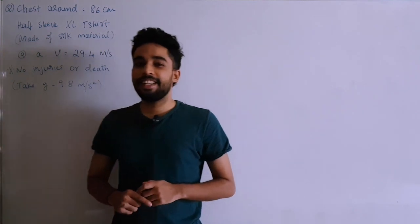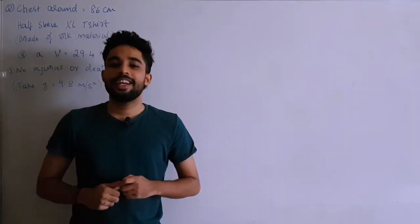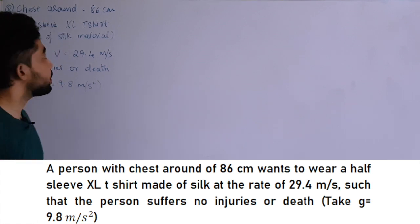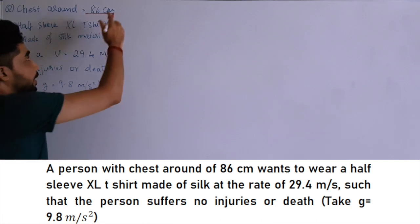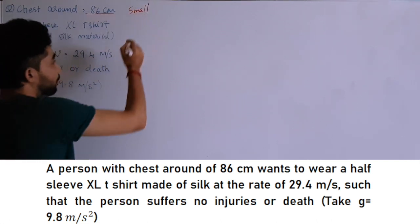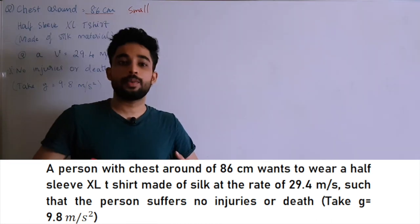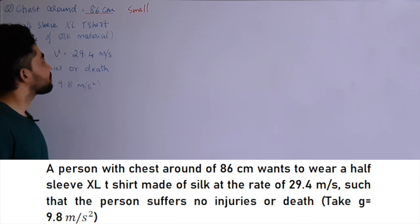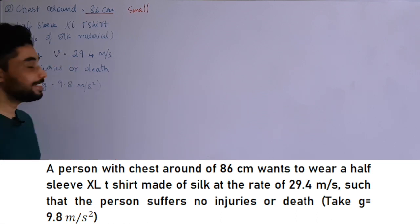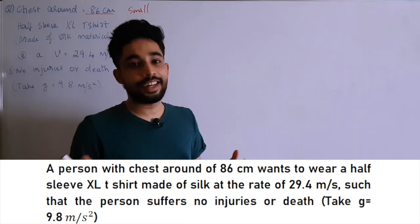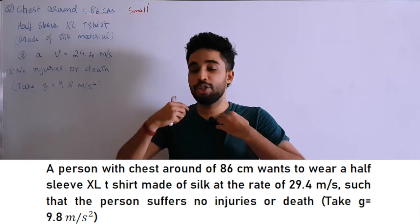Hello everyone, welcome back to Detangle. In this video we have a very interesting question. A person with a chest circumference of 86 centimeters — which means his size is small — wants to wear a half-sleeve extra-large t-shirt made of silk material at a velocity of 29.4 meters per second.